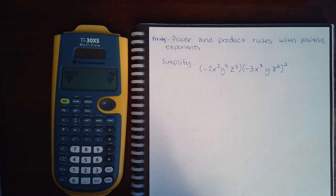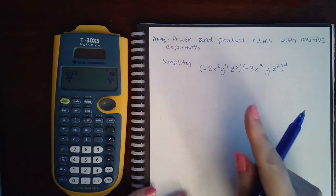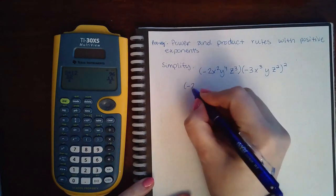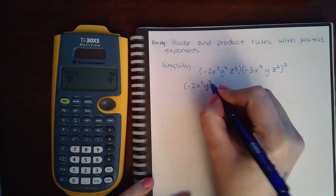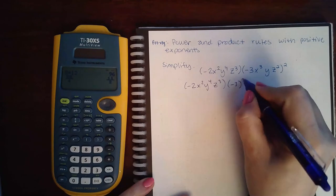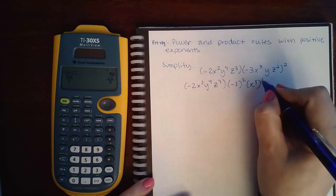So when we have this here, the first thing you have to do is apply your exponents. So I'm gonna keep the first factor the same and then I'm going to apply this square to every term inside that parentheses.